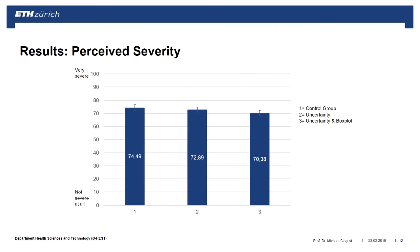Looking at severity results: again, no differences across the three groups. The control group, the uncertainty group, and the uncertainty-plus-box-plot group all assessed the severity of the situation the same way. We also asked whether measures should be taken based on these estimates — again, no differences across groups. So providing uncertainty information doesn't seem to have an impact on how people react to the situation or on their decision-making.